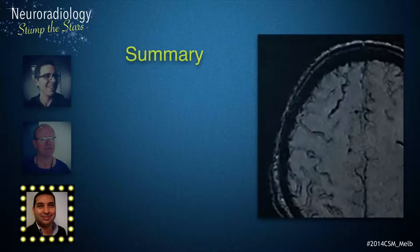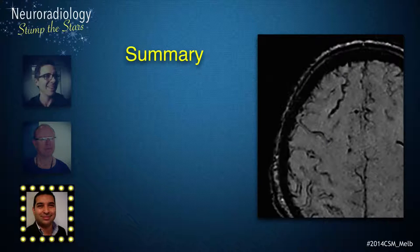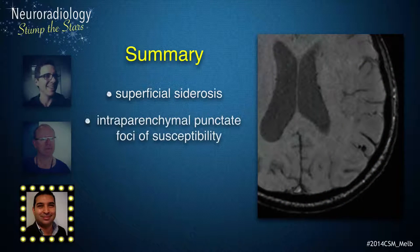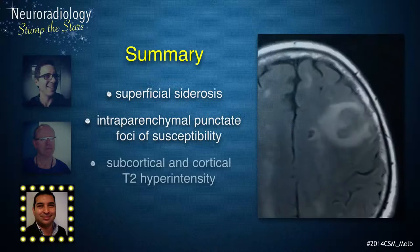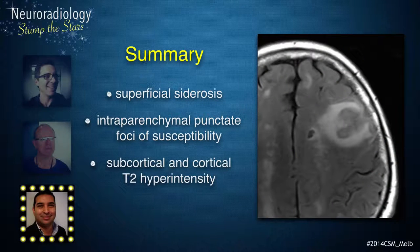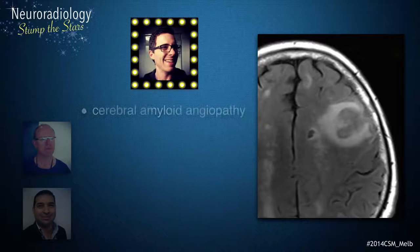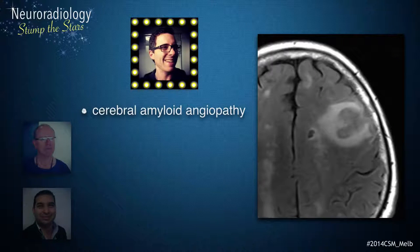In summary, we have extensive superficial siderosis, at least six foci of intraparenchymal susceptibility artifact, and extensive white matter abnormality with some cortical involvement. Overall, the features are characteristic of cerebral amyloid angiopathy, which in isolation fails to account for the relatively circumscribed region of FLAIR signal abnormality in the left frontal lobe with mass effect.